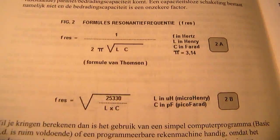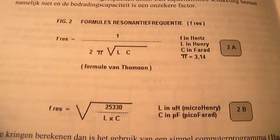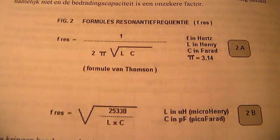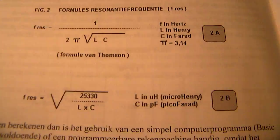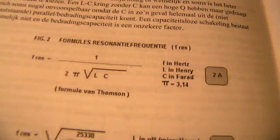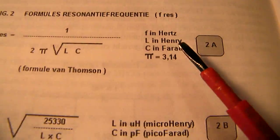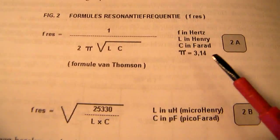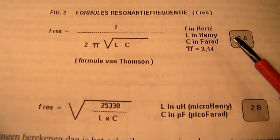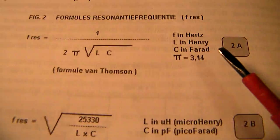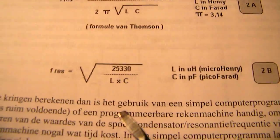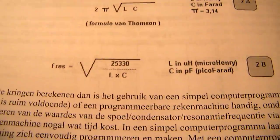Here you see the formula. There are two formulas. The formula from Thomson. The values in the formula from Thomson are quite high. So Henry and Farad are extremely high values. Normally in radio technology we work with microhenry and picofarad. So this is perhaps a better formula.